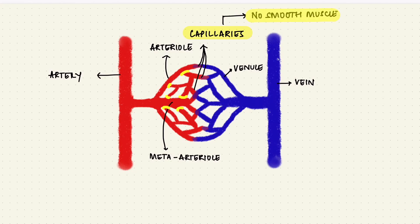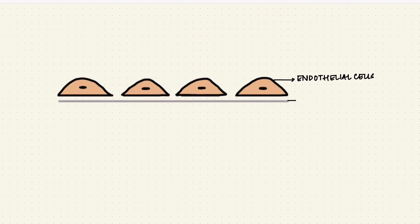What they do have is a layer of endothelial cells and a thin basement membrane. This wall is just about a half micron thick. There are spaces between the endothelial cells called intercellular clefts.